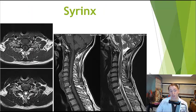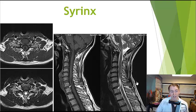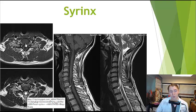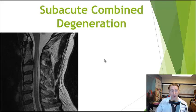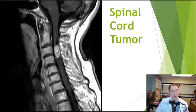A syrinx — enlargement of the normal central canal containing cerebrospinal fluid — is usually milder but can cause pain, temperature sensation loss, and neuropathic pain. It's recognized because the signal matches cerebrospinal fluid on all MRI sequences. Metabolic diseases can also cause spinal cord lesions; subacute combined degeneration involves degeneration of the back and lateral columns and can be caused by B12 deficiency, copper deficiency, or nitrous oxide poisoning.